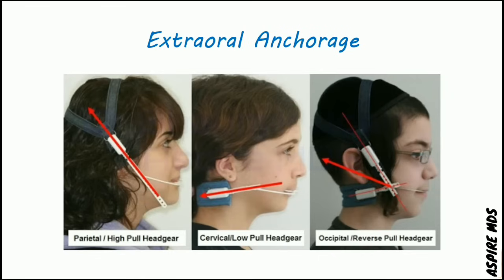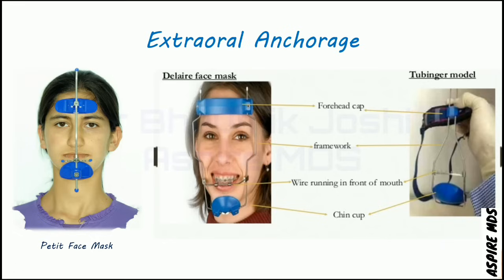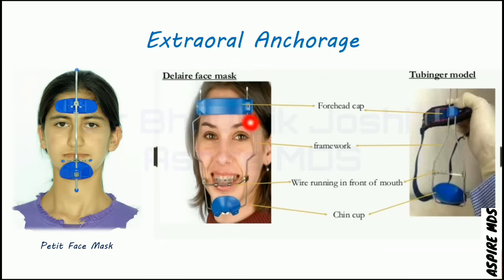Extra oral anchorage is taken from sources present outside the oral cavity, such as headgear. Headgear is of three types: parietal or high pull headgear, cervical or low pull headgear, and occipital or reverse pull headgear. We can also use a face mask. The Petit face mask has a forehead cap and chin cup joined through a single rod, whereas the Delaire face mask has a forehead cap and chin cup connected through a wire framework. This difference between Delaire and Petit face masks can be asked in image-based MCQs.